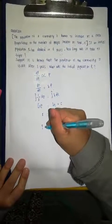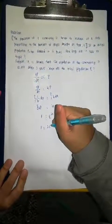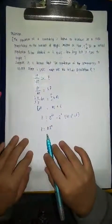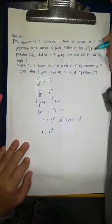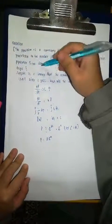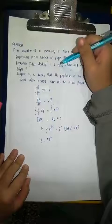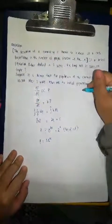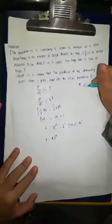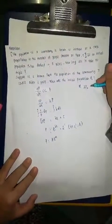Then, P is equal to A e to the power of KT. With this, we have the first condition. Population P₀ has doubled in 5 years. Double, so means the first condition is 2P₀ in 5 years.